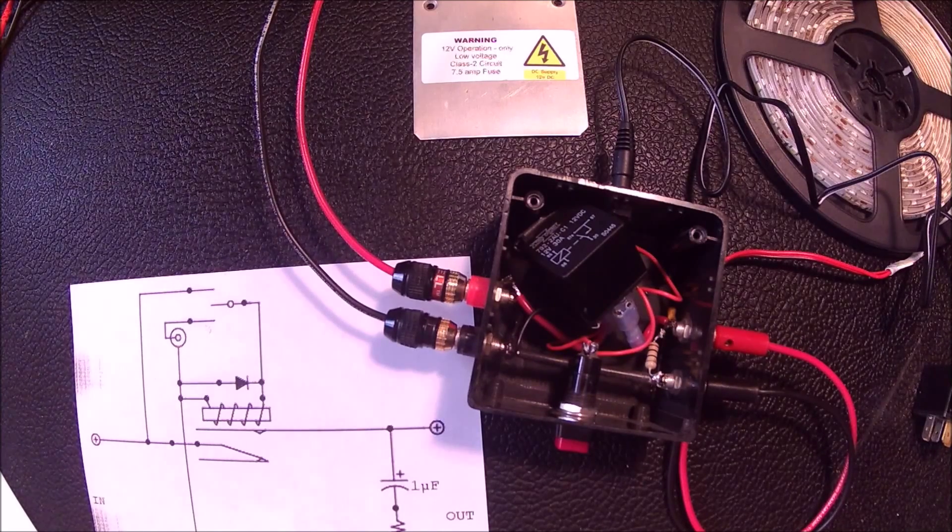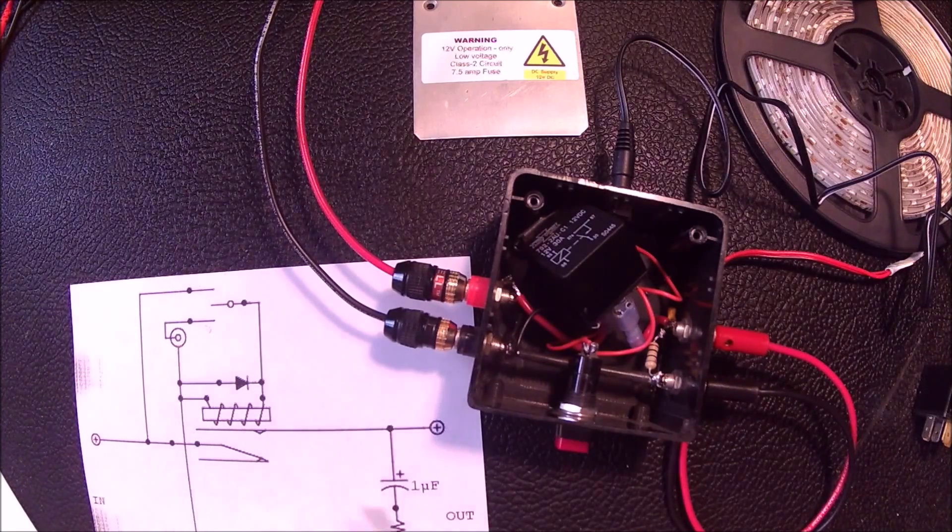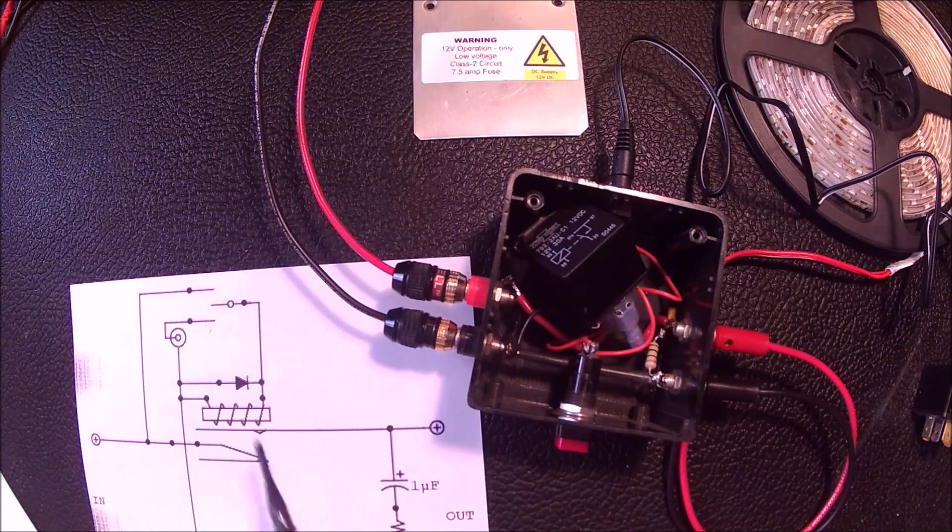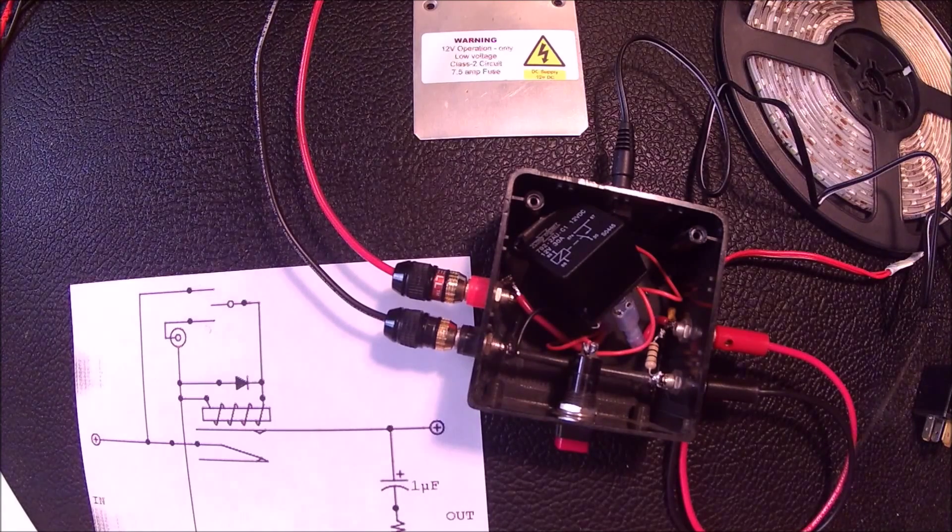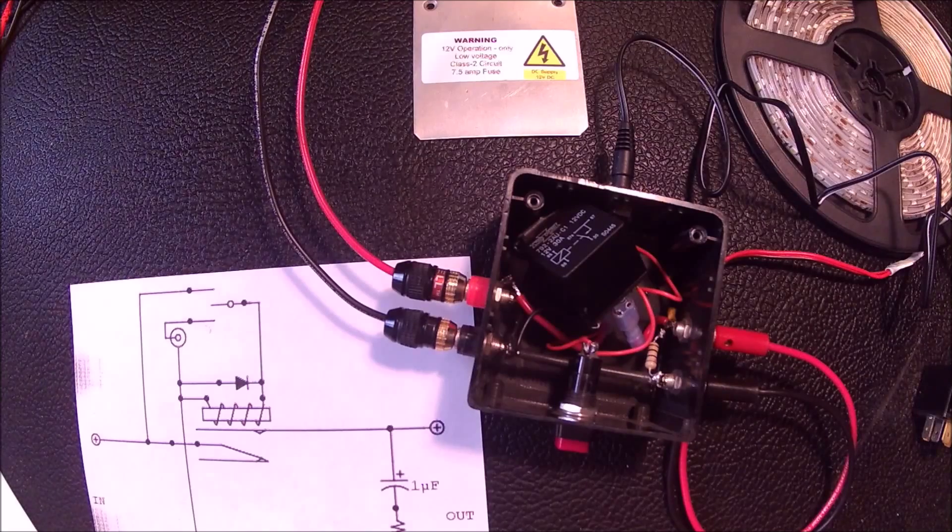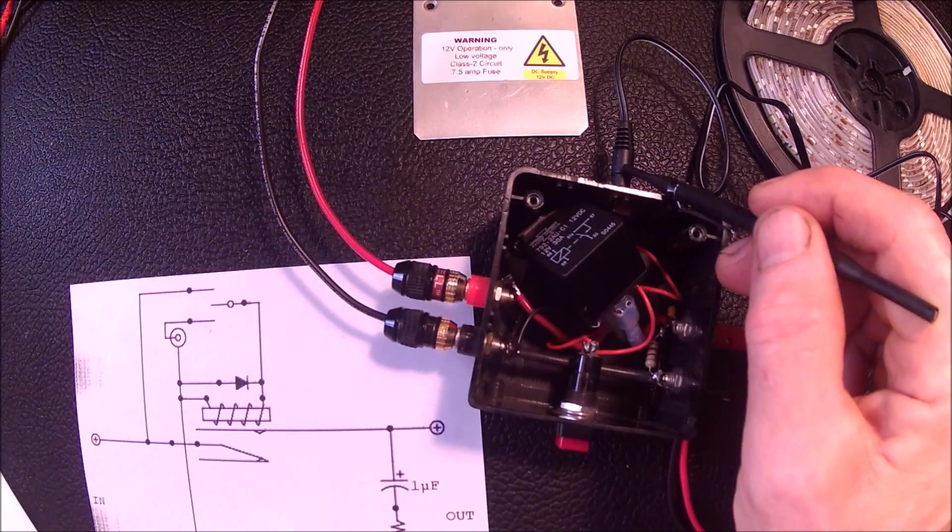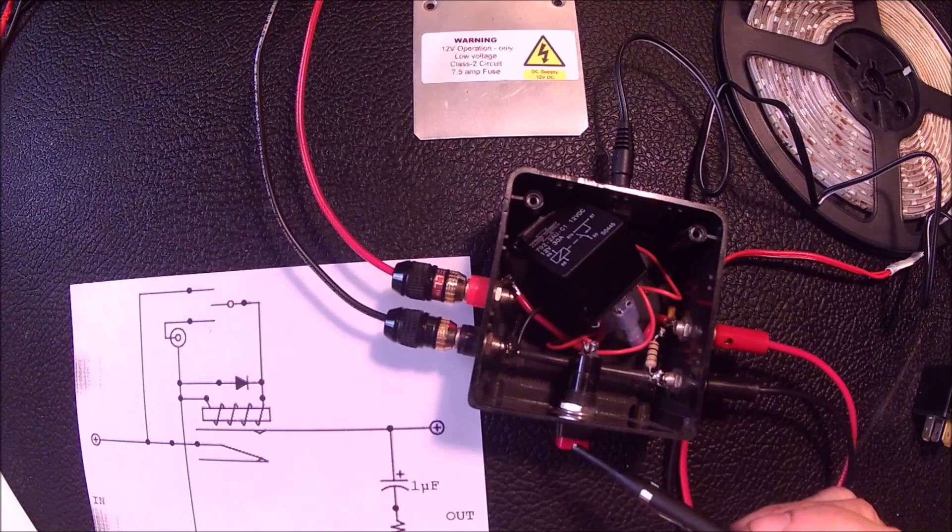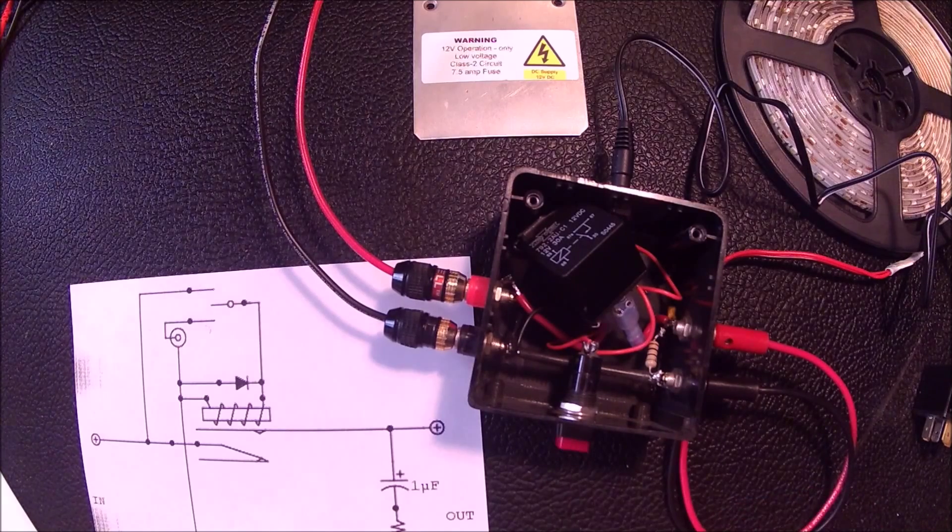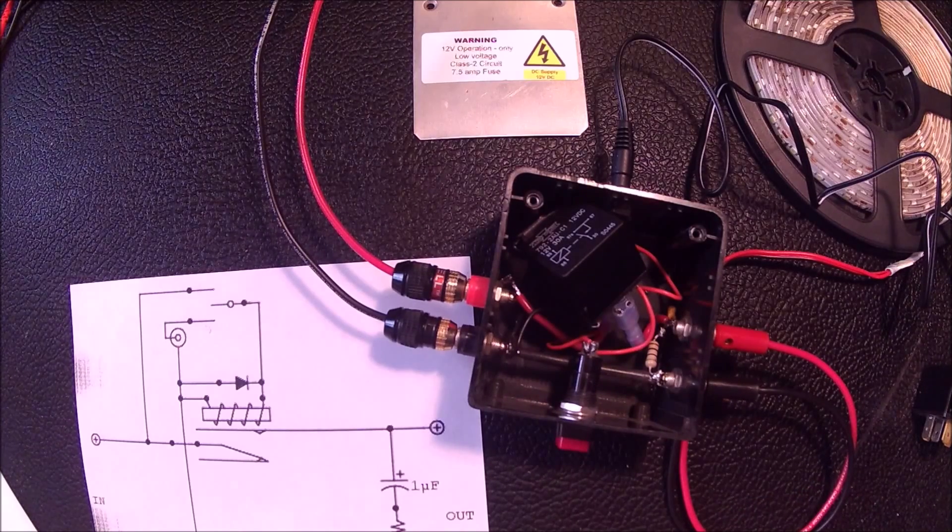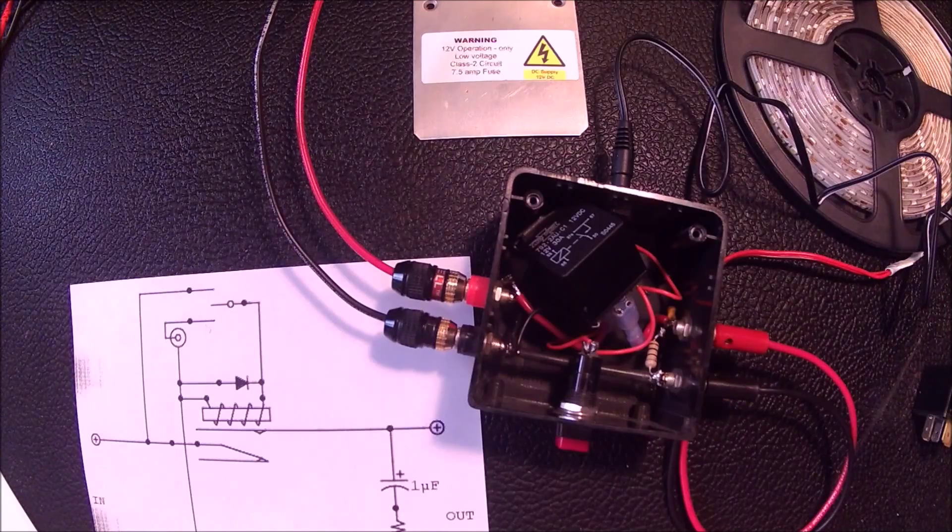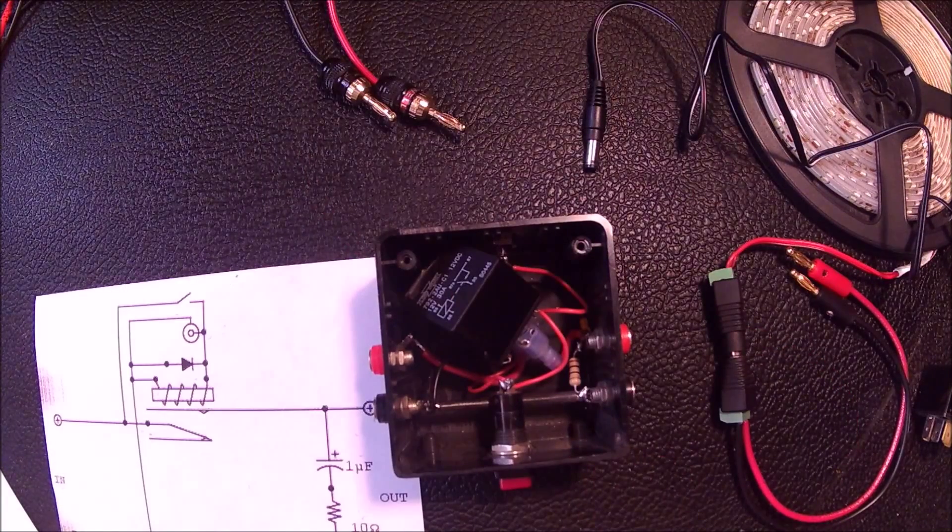I find there are fewer choices in these single pole double throw switches. So I usually stick to the single pole single throw version. And in normal operation I only use the remote input. And if the grid goes down I use the manual switch. And there's really no need to use both at the same time. So let me get this box finished up.